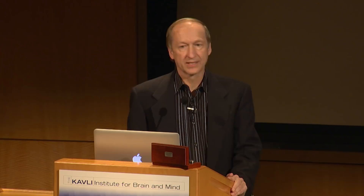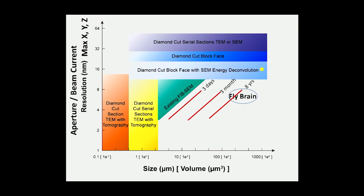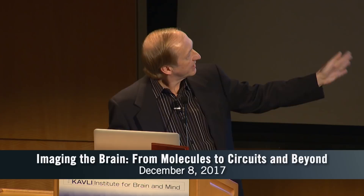I'd like to put FIB-SEM on a little diagram to show where it fits in the world. The bottom axis is size — we're looking at relatively larger structures, close to a millimeter for the fly brain. The vertical axis is resolution. Some techniques can get much better resolution but with more limited size. We're playing this trade-off between size and resolution, and I think FIB-SEM has a little bit of a sweet spot, and the fly brain sort of demands some of those attributes.